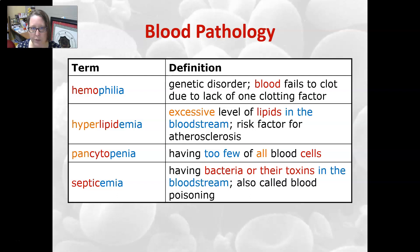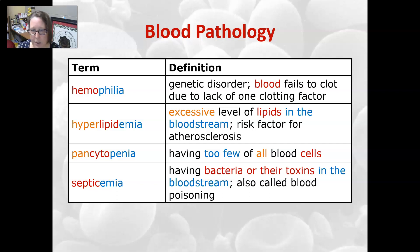Hemophilia is our first blood pathology term. Hemophilia is a genetic disorder in which blood fails to clot due to a lack of one clotting factor. Hyperlipidemia is an excessive level of lipids in the bloodstream — hyper meaning excessive, lipid meaning fats or lipids, and -emia meaning in the blood.